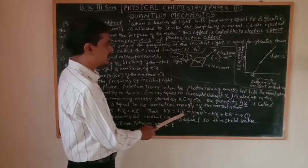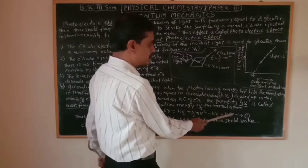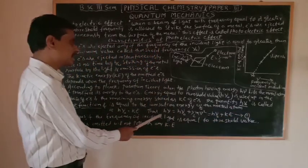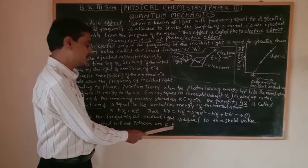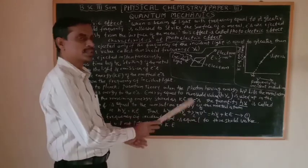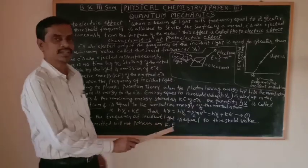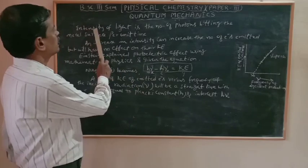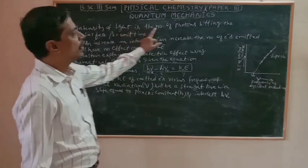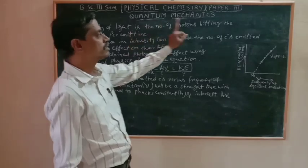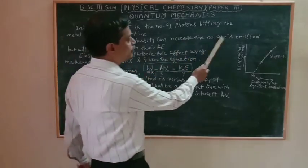Thus: hν = hν₀ + ½mv². If the frequency of the incident light is equal to the threshold value, the emitted electrons will not possess any kinetic energy. The intensity of light is the number of photons hitting the metal surface per unit time — per second or per minute. Increasing the intensity increases the number of electrons emitted, but has no effect on their kinetic energy.